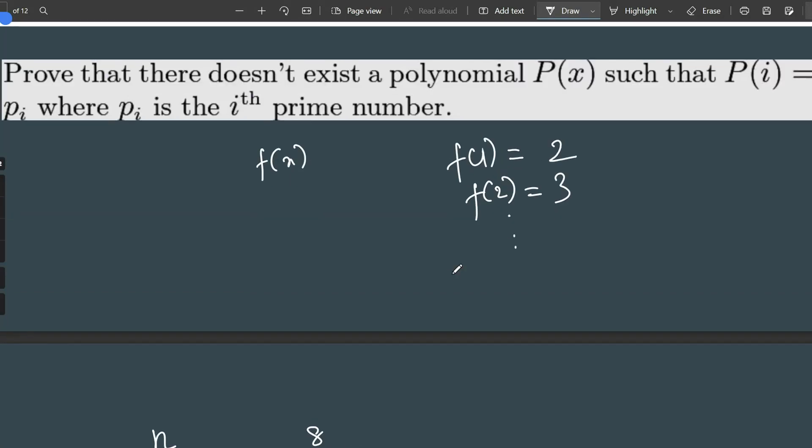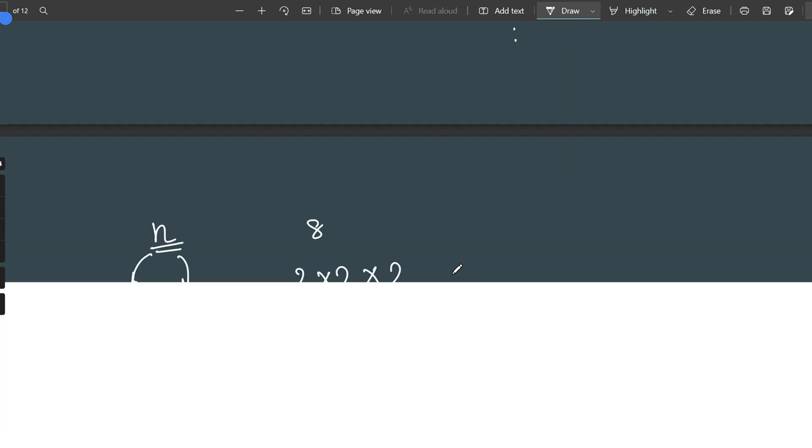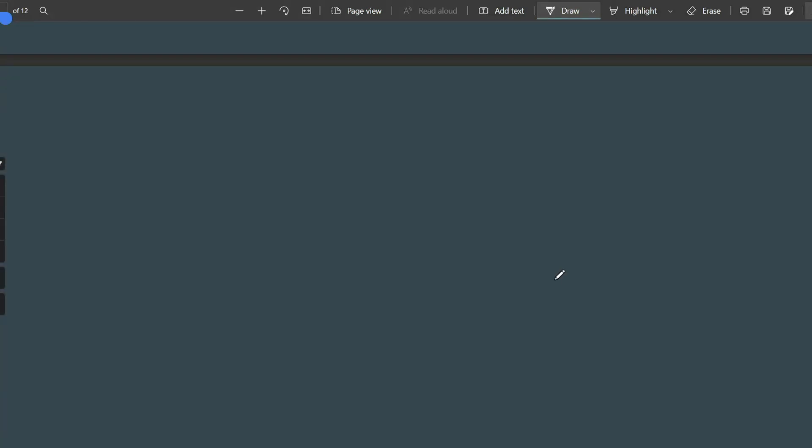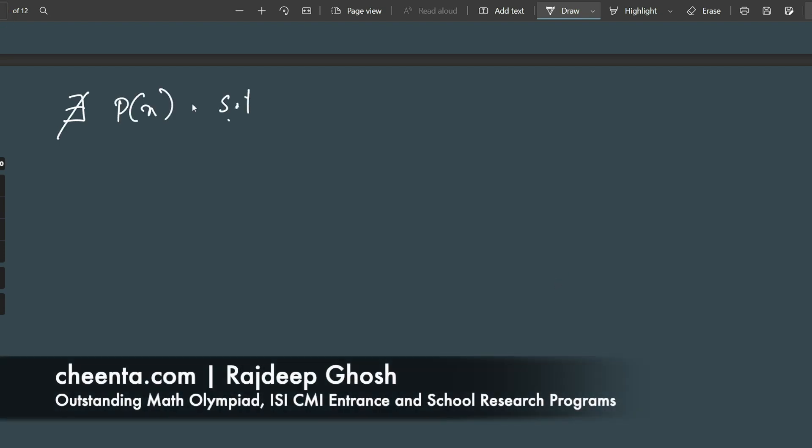We'll come back to our problem. We want to show that there does not exist such a polynomial. What we'll actually do is prove a much stronger problem: there does not exist a P(x) such that every output for natural number inputs can be just primes. There must eventually be a composite number here. This sequence P(1), P(2) up to P(n) cannot only contain primes. That's a much stronger statement.